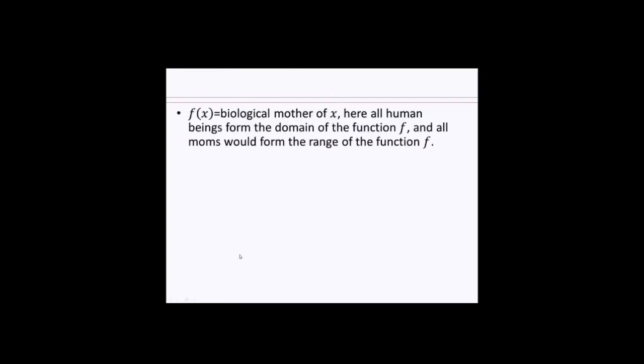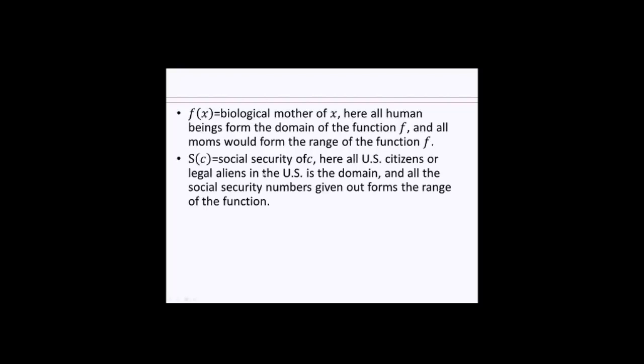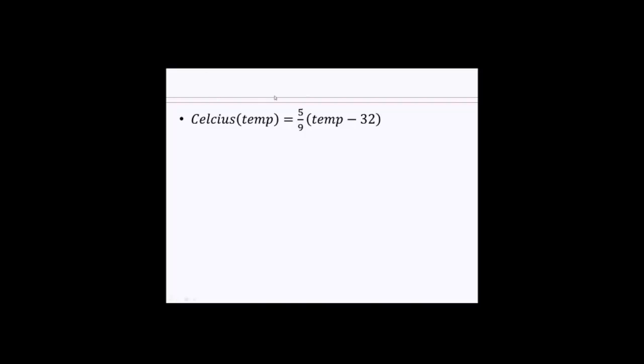So if you have f(x) equals biological mother of x, here all human beings would form the domain of the function, and all moms would be the range of the function. What if I say s(c) equals social security of c? Here, all U.S. citizens or legal aliens in the United States is the domain, and all the social security numbers given out forms the range of the function. You can also use whole words for the name of the function and different letters or words for the input. For example, Celsius of temperature equals 5 ninths of (temperature minus 32). Do you recognize this? What do you think that is? This is a way to convert Fahrenheit temperature to Celsius temperature.